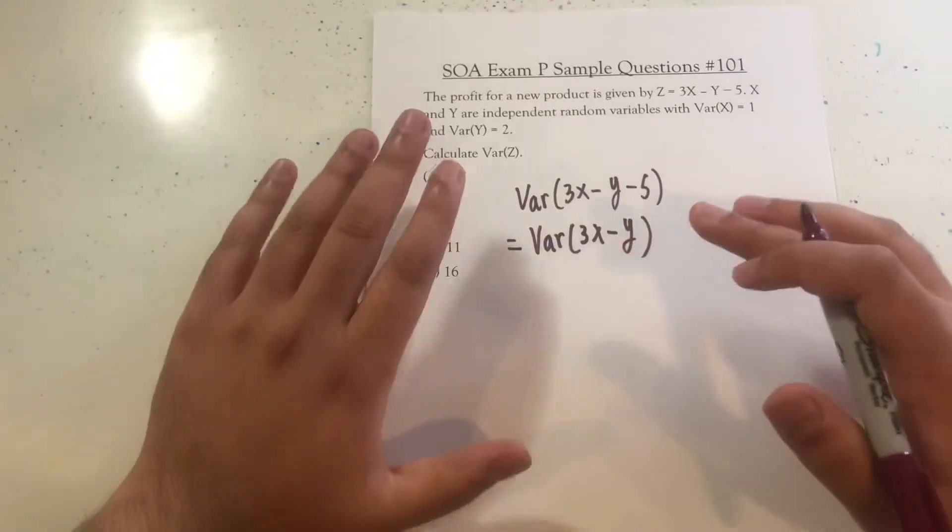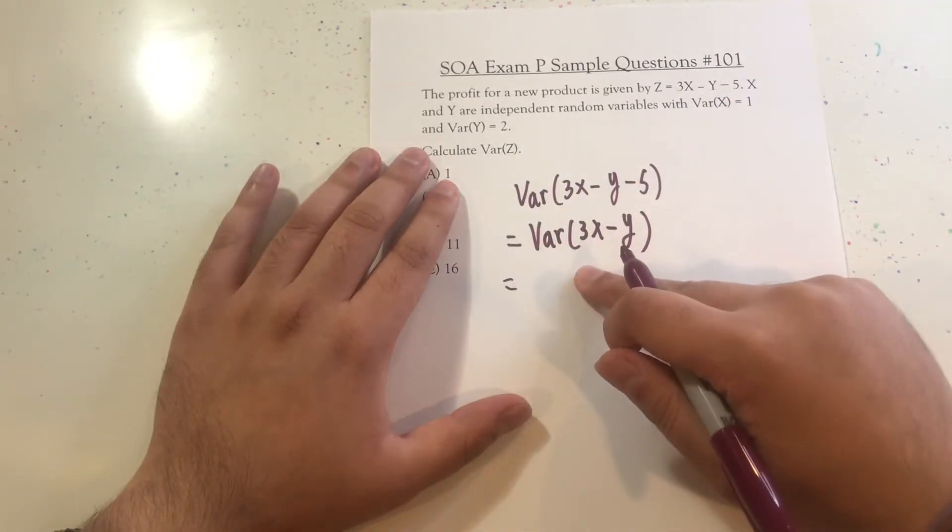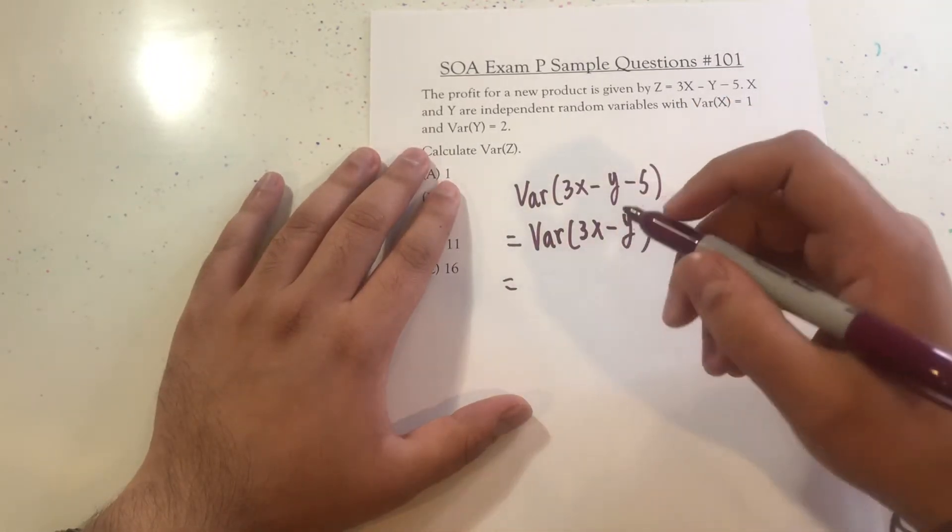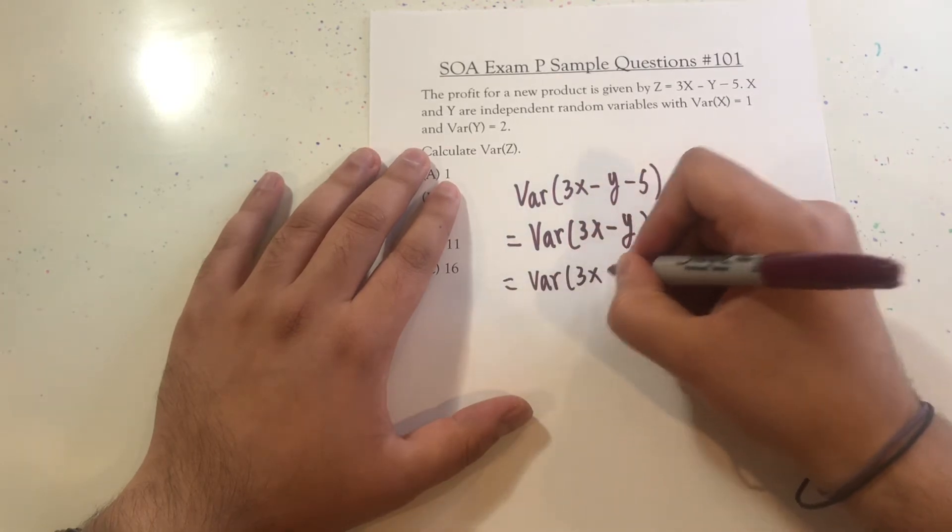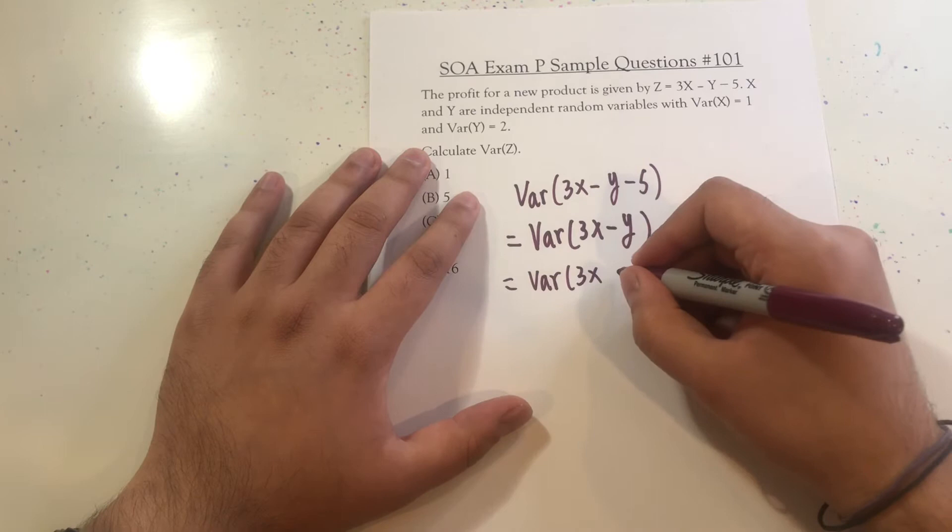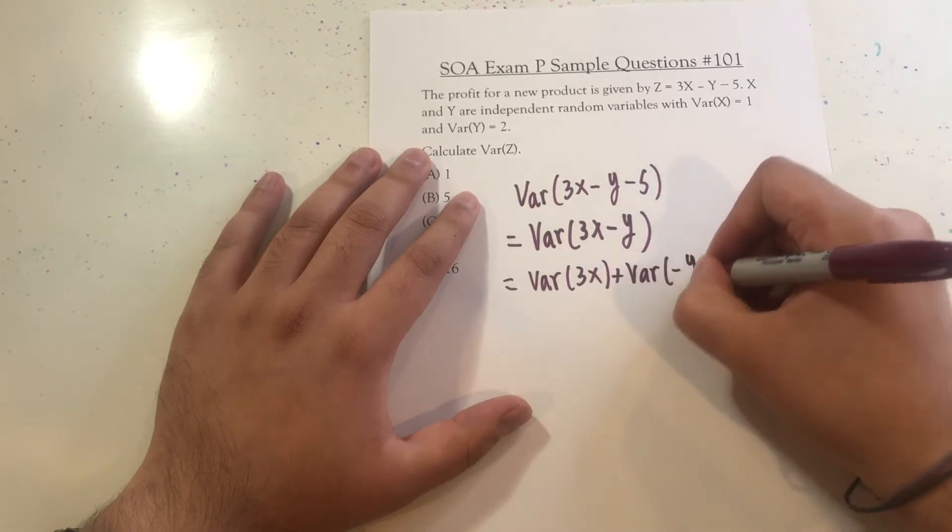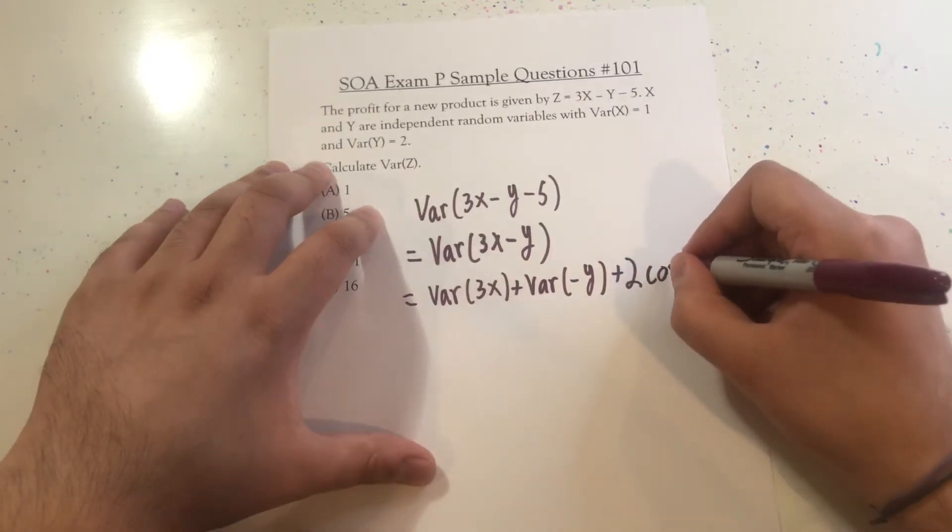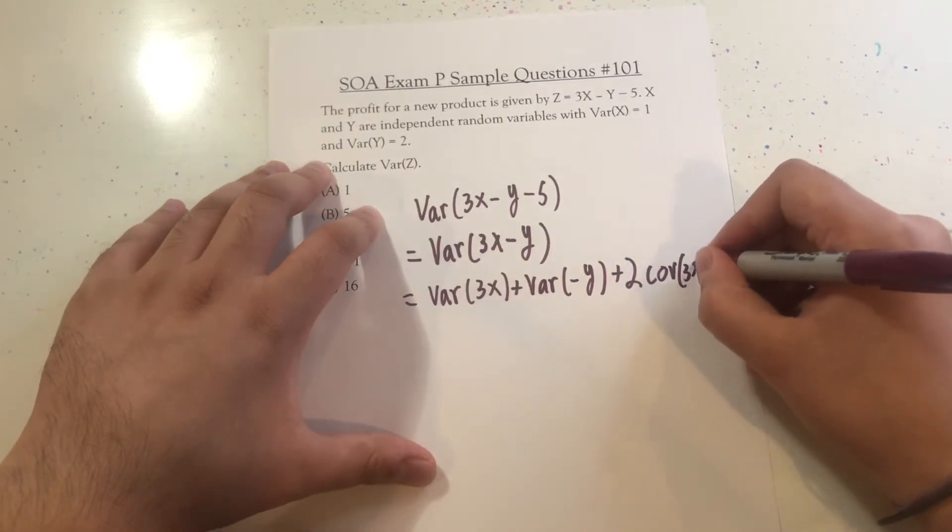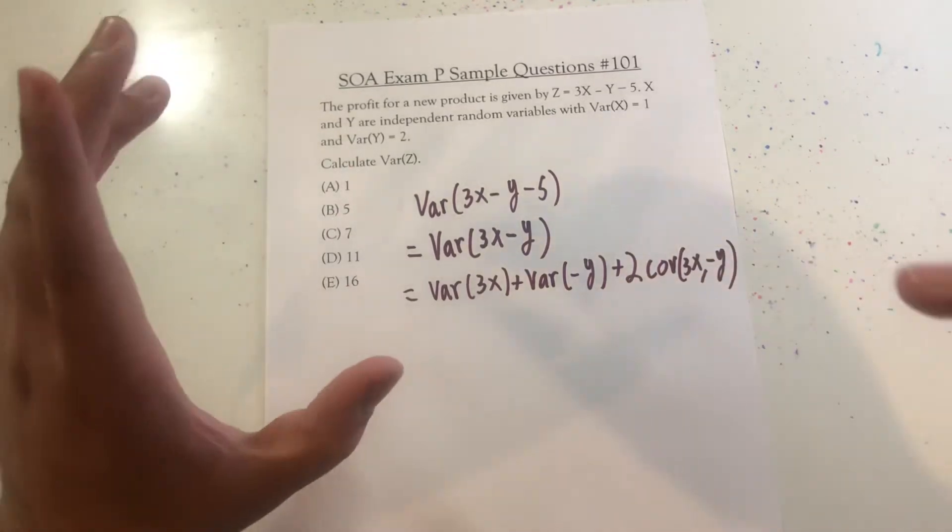Now, when we're calculating the variance of two different random variables, what's going to happen is this is going to be the variance of 3X plus the variance of negative Y plus 2 times the covariance of 3X, negative Y. Now, here's something that's really cool. Something you should know.